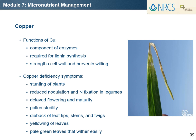Copper is a component of enzymes that play a key role in photosynthesis, respiration, lignin synthesis, and carbohydrate and nitrogen metabolism. Copper deficiency results in stunting growth of plants, and since copper is required for lignin synthesis, deficiency also affects cell wall strength and prevention of wilting. Copper deficiency symptoms include reduced nodulation and nitrogen fixation in legumes, delayed flowering and maturity, pollen sterility, dieback of leaf tips, stems, and twigs, yellowing of leaves, stunted growth, and pale green leaves that wither easily.